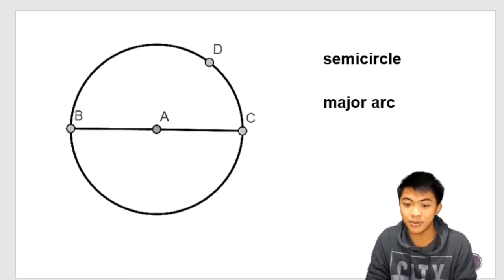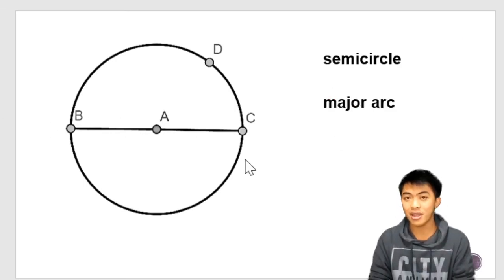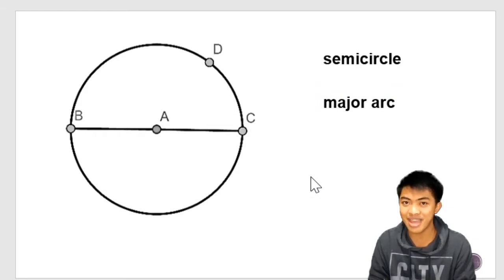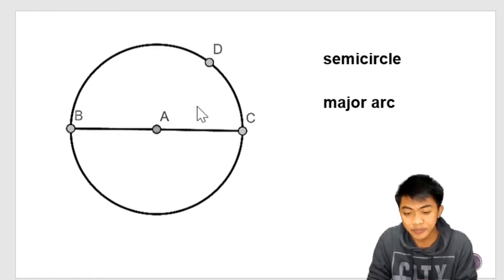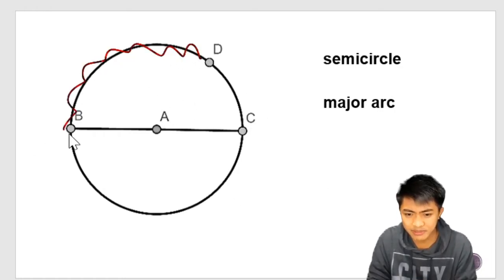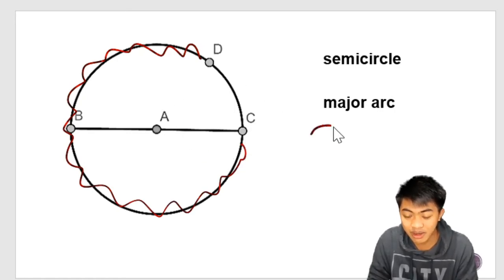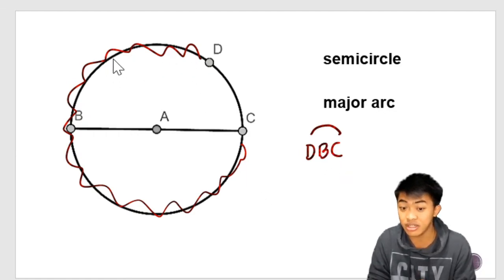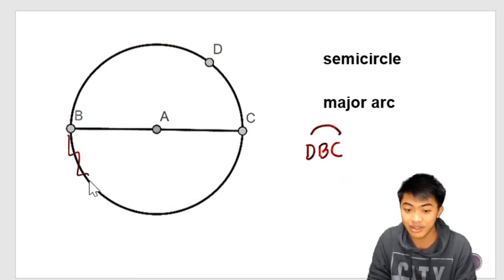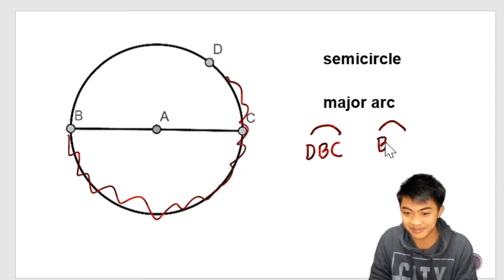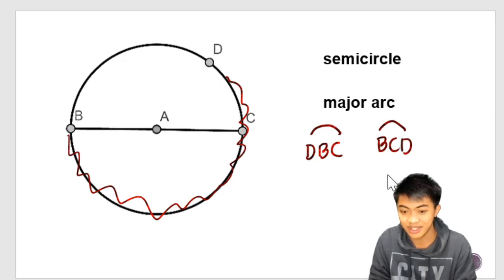So now let's proceed with major arc. Major arcs are arcs greater than a semicircle. So let's try to identify the major arcs in this figure. So this one here is a major arc. It's bigger than the semicircle. We can name this arc DBC. And we do have another one. We have here arc BCD. So there we have two major arcs in this figure.